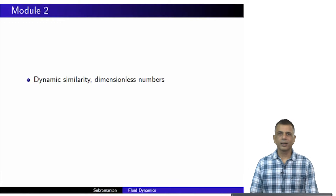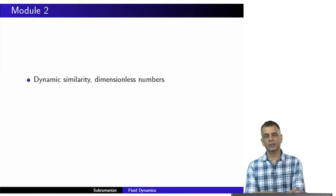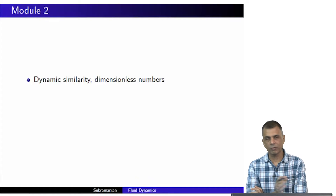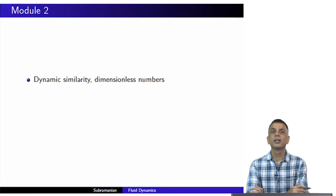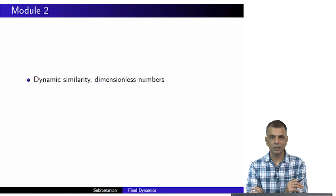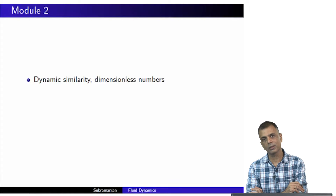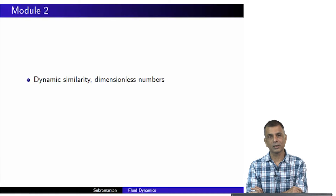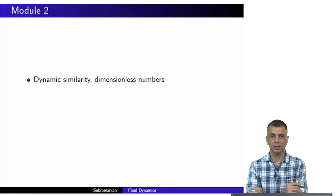We are back and we will resume our discussion of dimensionless numbers in fluid dynamics. We went through a quick survey of several of these when we met last, and today we will give special attention just to the Reynolds number. The Reynolds number and the magnetic Reynolds number are things that are especially important in astrophysics, hence my motivation in doing this.